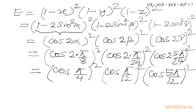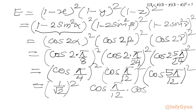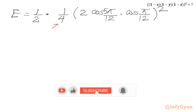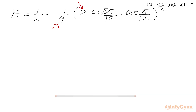Now cos(π/4) = 1/√2, so cos²(π/4) = 1/2. Multiplying by 4 in numerator and denominator, we can apply the product-to-sum formula 2 cos A cos B = cos(A+B) + cos(A−B) to the term cos(π/12) · cos(5π/12). We write 1/8 in front of the bracket.